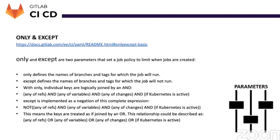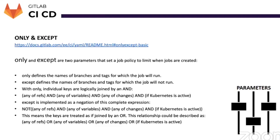Some interesting values that can be applied to 'only' and 'except' include branch names, tags, and the special keyword 'merge_requests'. If you apply a condition with 'only: merge_requests', that pipeline will only run whenever somebody raises a merge request. You can also use multiple keys under 'only' and 'except', and these keys will be evaluated as a single conjoined expression — 'only' means include this job if all conditions match, and 'except' means exclude this job if any condition matches. With 'only', individual keys are logically joined by AND, meaning all conditions must be true; if even one condition fails, the pipeline won't run.